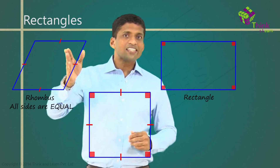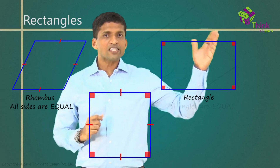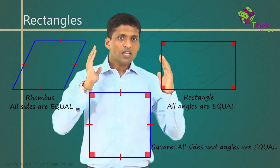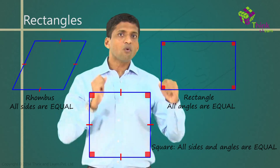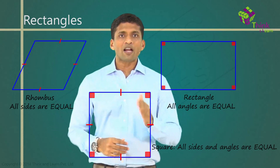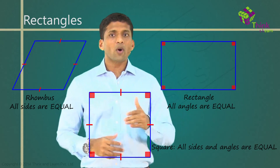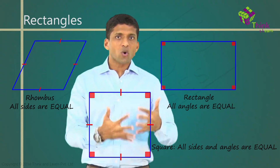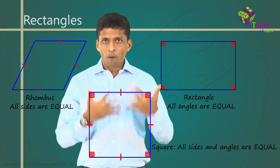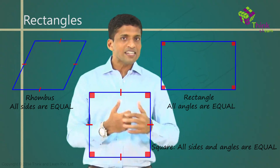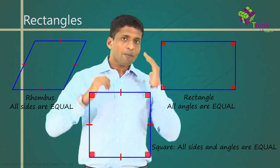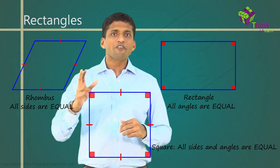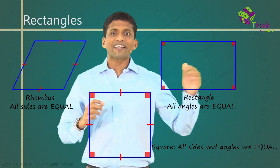When only sides are equal, it's called a rhombus. When only angles are equal, it's called a rectangle. When both happen — that is, when sides are equal and angles are equal — that kind of parallelogram will be a square. So, it's obvious that a square will have the properties of a parallelogram, because finally it's a parallelogram. It will also have the properties of a rhombus and the properties of a rectangle.